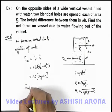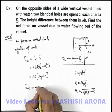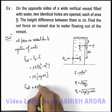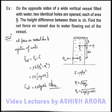So the net force acting on the vessel walls due to ejection of water can be given as twice rho S g delta h. That will be the answer to this problem. Thank you.